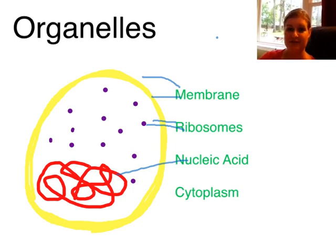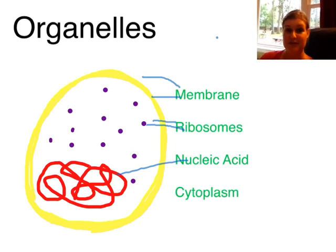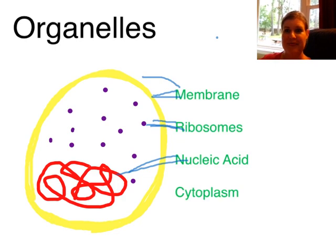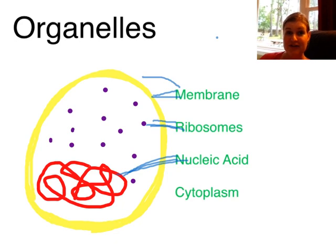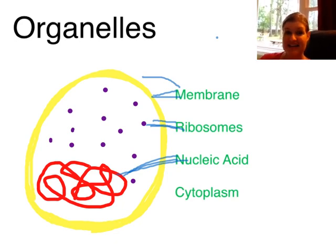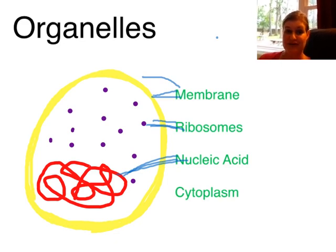Next, we have ribosomes, which are these purple dots on the drawing. Ribosomes are structures responsible for making proteins — also very important, and another biomolecule. Then we have the nucleic acid, represented by that red squiggly line. Nucleic acid can be in the form of DNA or RNA. It's the instructions your cell needs in order to make everything to survive — it's kind of the equivalent of the brain for the cell.